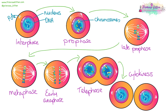In mitosis we go from one parent cell to two identical daughter cells. The first thing that needs to happen is that the DNA in the nucleus needs to condense into chromosomes, and then they need to line up down the middle. Once they're all lined up and all the checks are taking place to make sure the chromosomes aren't going to go astray, they can start to be pulled apart to either end of the cell. New nuclei will form and then they will separate into two identical daughter cells.